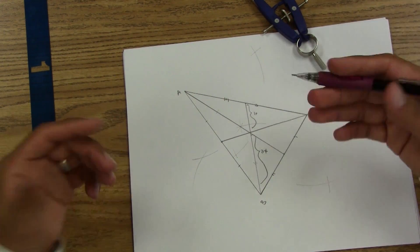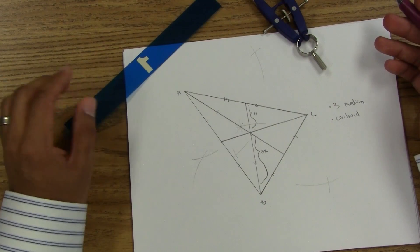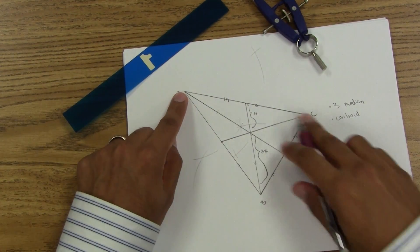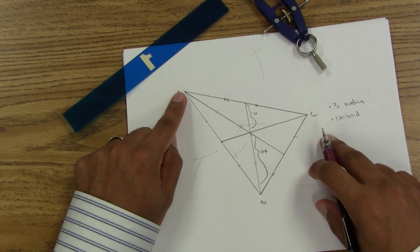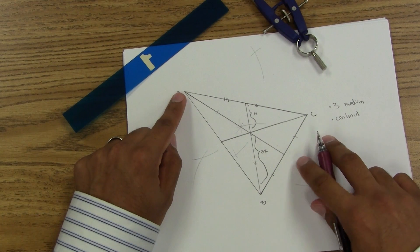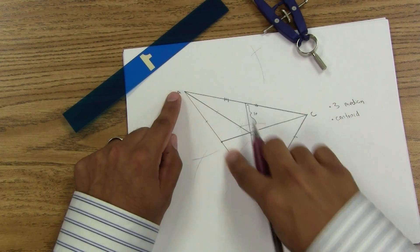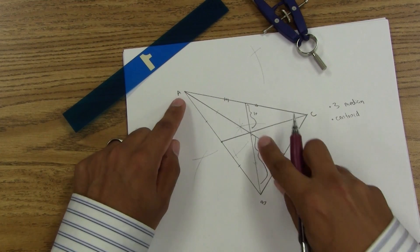Now if you, for some odd reason, want to see why the next part's cool, you can go ahead and do this same thing on construction paper. Cut this out, cut out your triangle after you've found your centroid.